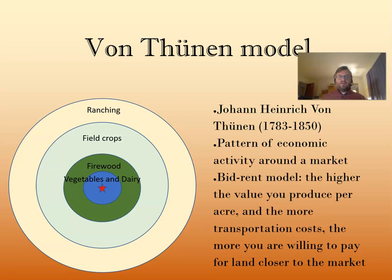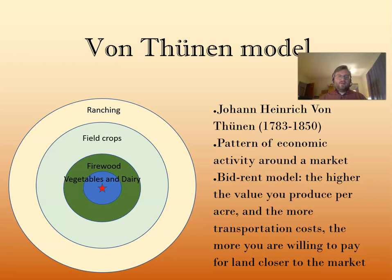The innermost ring is vegetable and dairy production — things that produce a lot of value from small areas of land. If you have a vegetable farm, you're growing a lot of high-value crops and getting a lot of dollars per acre. So you're willing to purchase high-cost land close to the market center. You only need a small amount of land to make enough money to support yourself, and that really cuts down your transportation costs — important since von Thunen's era was before refrigeration, so you needed to get vegetables to market quickly.